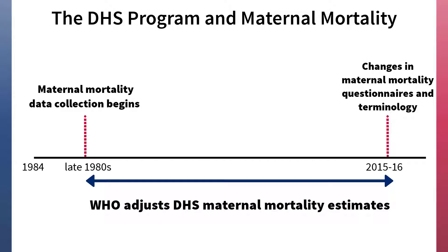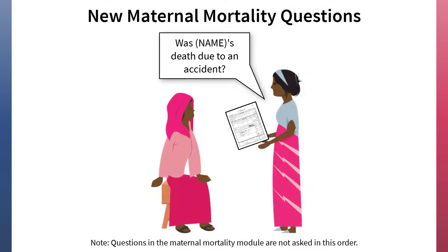Starting in late 2015, DHS made changes to the questionnaire that allow calculations that more closely align with the World Health Organization's definition. Questions have been added on the cause of death of siblings, so deaths due to accidents or acts of violence can be filtered out.